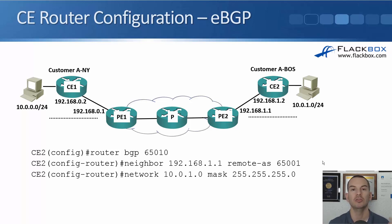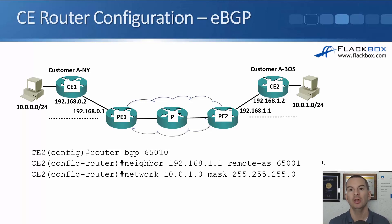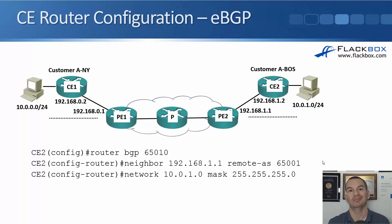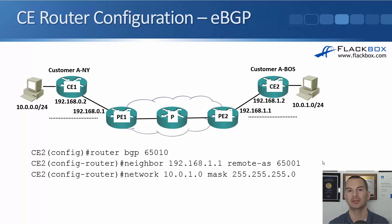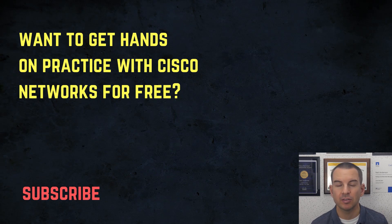MPLS Layer 3 VPNs typically use either static routes or eBGP from the CE to the PE routers. For the CCNA exam, you don't need to know how things work internally in the service provider or how to configure it — that was shown to give you end-to-end understanding. For the exam, you need to understand and be able to configure BGP from the customer point of view: for internet routing with dual-homed providers, and for MPLS Layer 3 VPNs as shown here. Verification commands include: show ip bgp summary to check neighbor status, show ip bgp to check received routes, and show ip route to verify routes in the routing table.